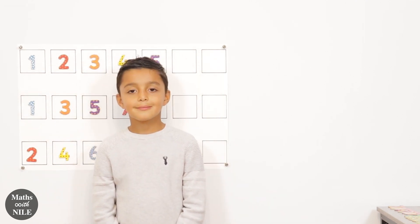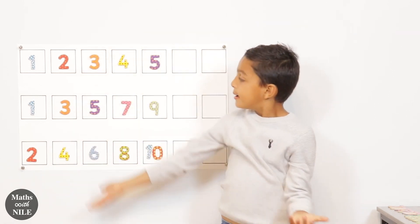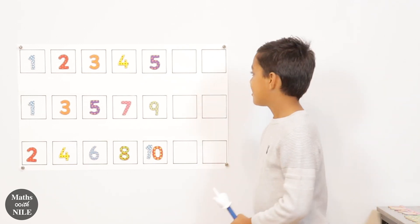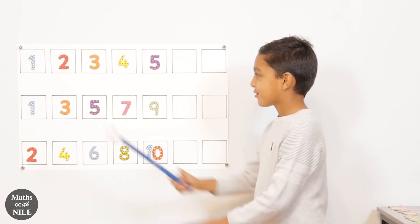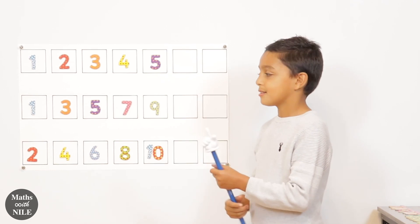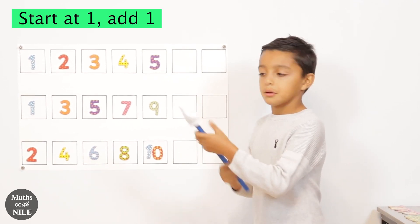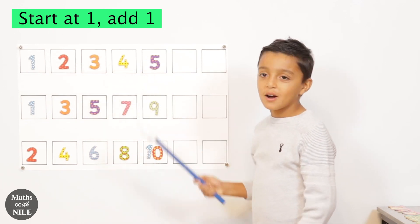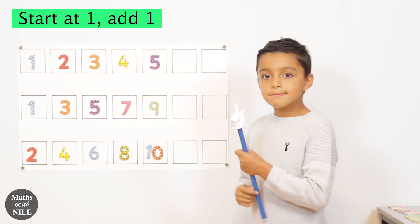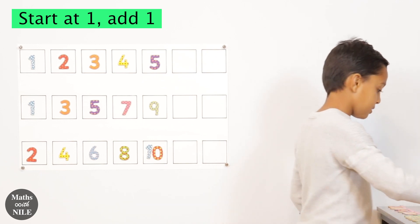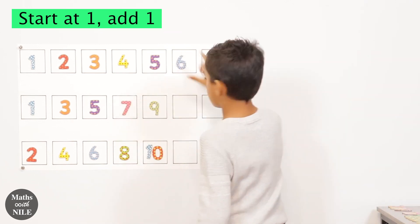So we've got three sequences on the board behind you. We're going to start with the first one. Can you go through and explain what's happening in that first row? Every time it adds one. And what number is it starting from? One. So can you go through the numbers for us? One, two, three, four, five. So you said it's adding one — what are the two numbers that are going to follow? Six, seven. Very good.